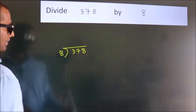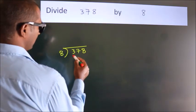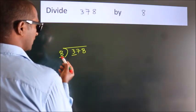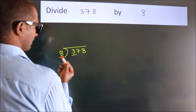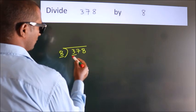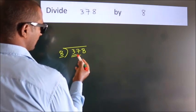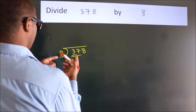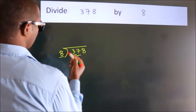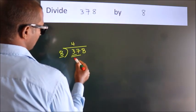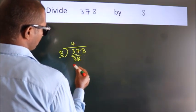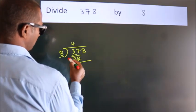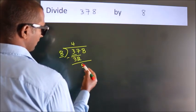Next, here we have 3 and here 8. 3 is smaller than 8, so we should take 2 numbers: 37. A number close to 37 in the 8 times table is 8 fours, 32. Now we should subtract, we get 5.